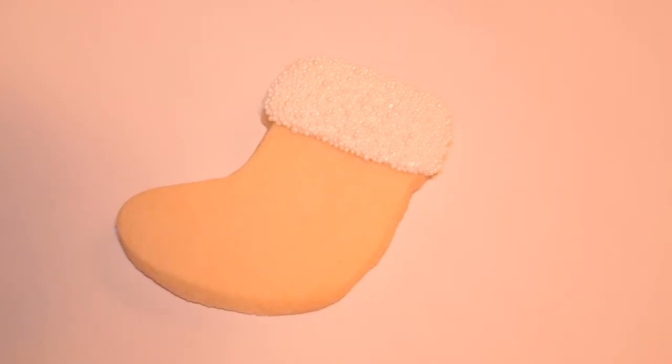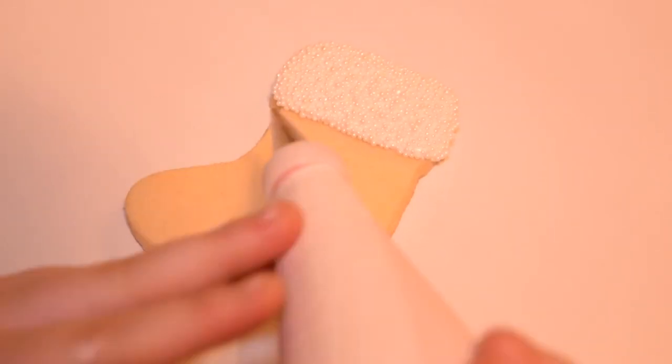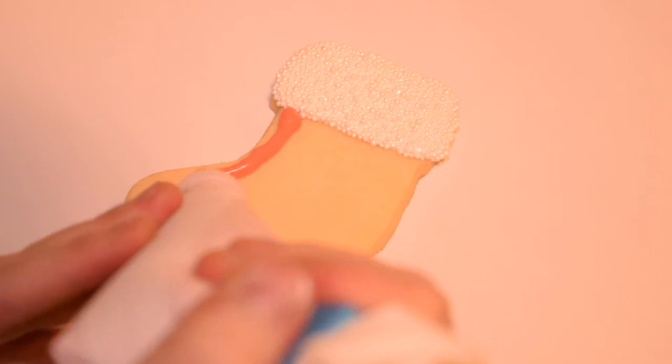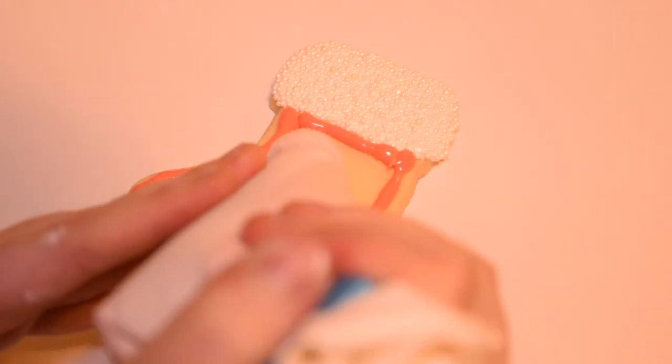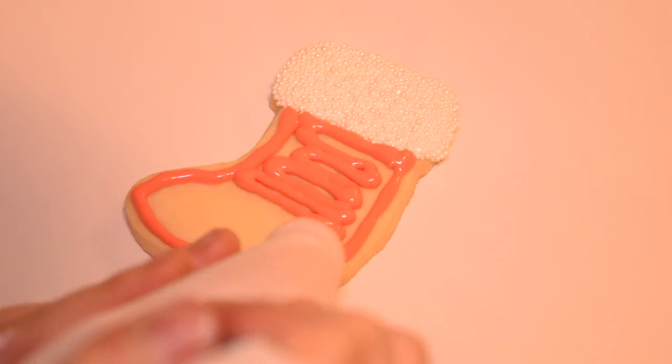While the icing is still wet I gently dip it in the sprinkles. Once that's dry I pipe red royal icing on the remainder of the cookie. I repeat the process with the scribe tool to get a smooth consistency.